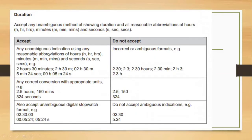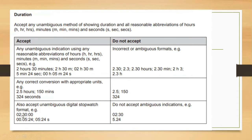For duration — hours, minutes, and related units — they accept any unambiguous indication using reasonable abbreviations such as H, HR, HRS for hours, and M, MIN, MINS for minutes. They accept 2 hours 30 minutes or 2H 30M. They would not accept ambiguous formats such as 2.30, or 2 to the ratio of 3. Any correct conversion with appropriate units — such as 2.5 hours equals 150 minutes — is also accepted. They do not accept the number alone without the unit. They also accept digital stopwatch format such as 02:30:00.